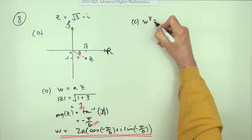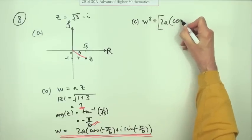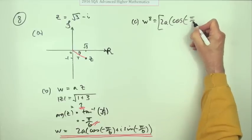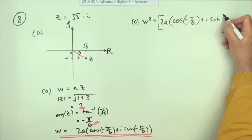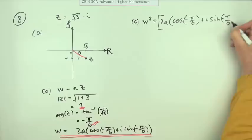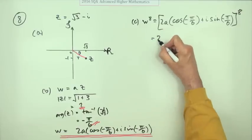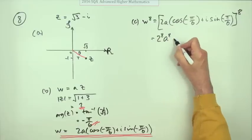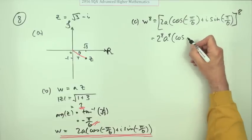So if I want w to the power eight, I would just take this 2a cos negative pi upon six plus i sine negative pi upon six and take that to the power eight, which means it'll be this part 2 to the 8, a to the 8. But by DeMoivre's, you just multiply the angles by 8.